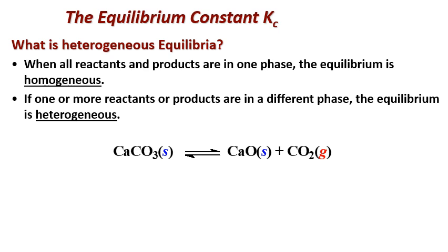This brings us to the equilibrium constant Kc. Equilibria can be divided into two groups. When all reactants and products are in one phase, the equilibrium is considered homogeneous. A homogeneous equilibrium has all reactants and products in a single solution. Reactions between solutes and liquid solutions belong to this type. The chemical species involved can be molecules, ions, or mixtures of both.